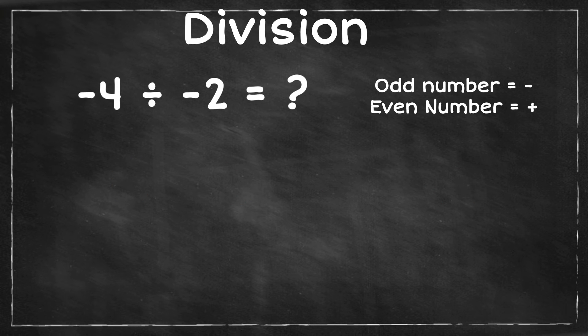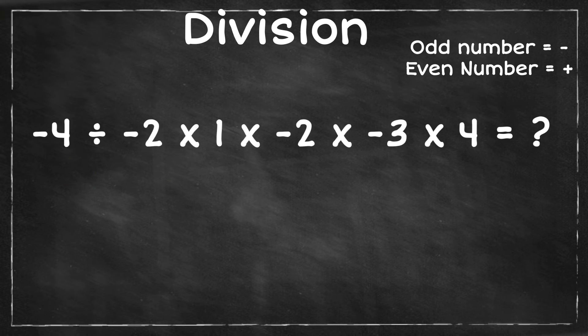Okay. How about division? Negative 4 divided by negative 2. It is 2 because you have an even number of negative numbers. How about negative 4 divided by negative 2 times 1 times negative 2 times negative 3 times 4?